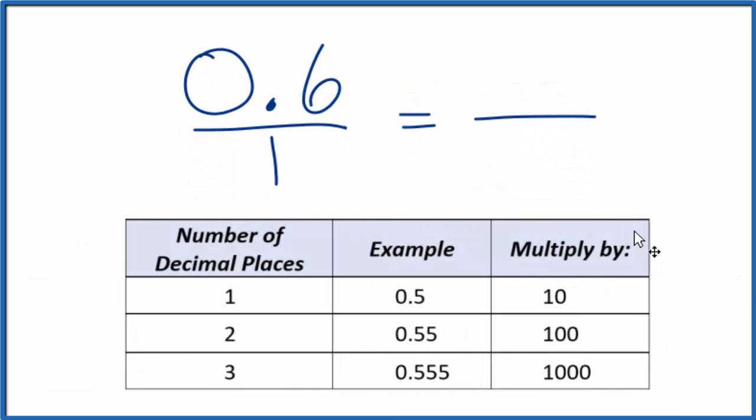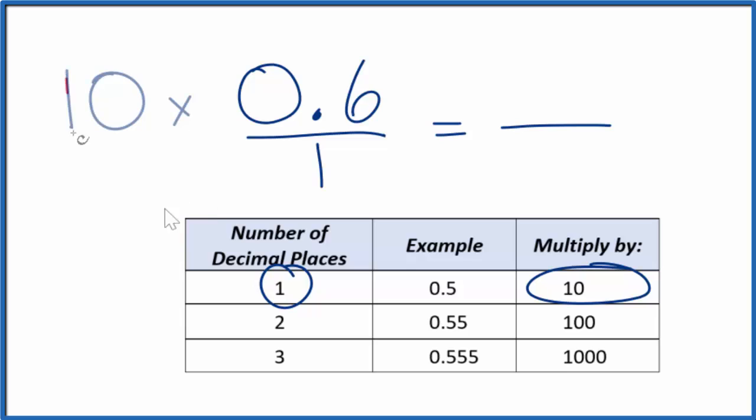0.6 has one decimal place here, so with one decimal place, let's multiply that by 10. 10 times 0.6 gives us 6, and that's a whole number, so we're getting close. But 6 is not equal to 0.6.